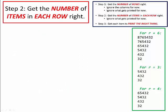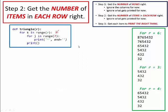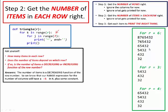Step 2 is to get the number of items in each row right. We know we have an outer loop, and within it an inner loop. In that interior loop, we're going to print them all on the same line — that's the end equals empty string, in other words suppress the newline that would normally come with a print. At the end of the interior loop, when finished with a row, do a print to get the line break to the next row. All we're trying to figure out is how many columns there will be.